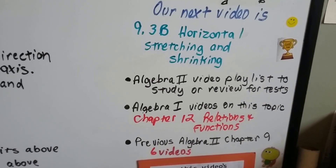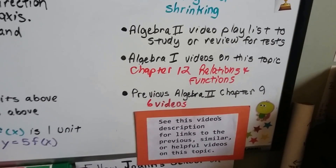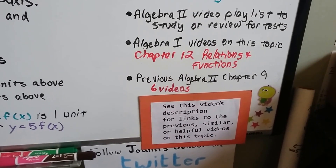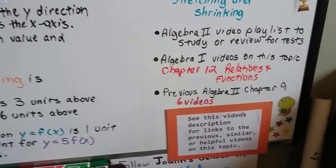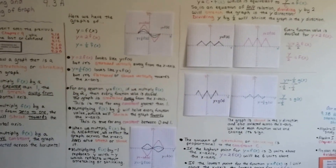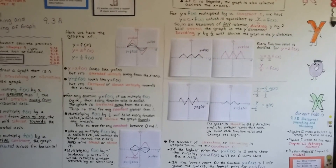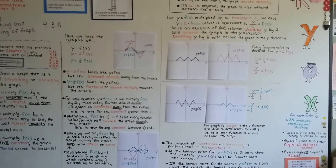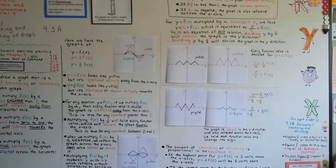Alright. Our next video is 9.3b, and we're going to talk about horizontal stretching and shrinking. I'll add this to the Algebra 2 playlist. I'll have a link to Chapter 12 from Algebra 1 that talked about relations and functions, and a link to the previous 6 videos for this chapter. So try to keep up with each step and this will flow very easily. I hope you're having a great day — don't forget to hit the like button if I've helped you, and don't forget I'm on Patreon.com where you can become a monthly patron for just a dollar or two.